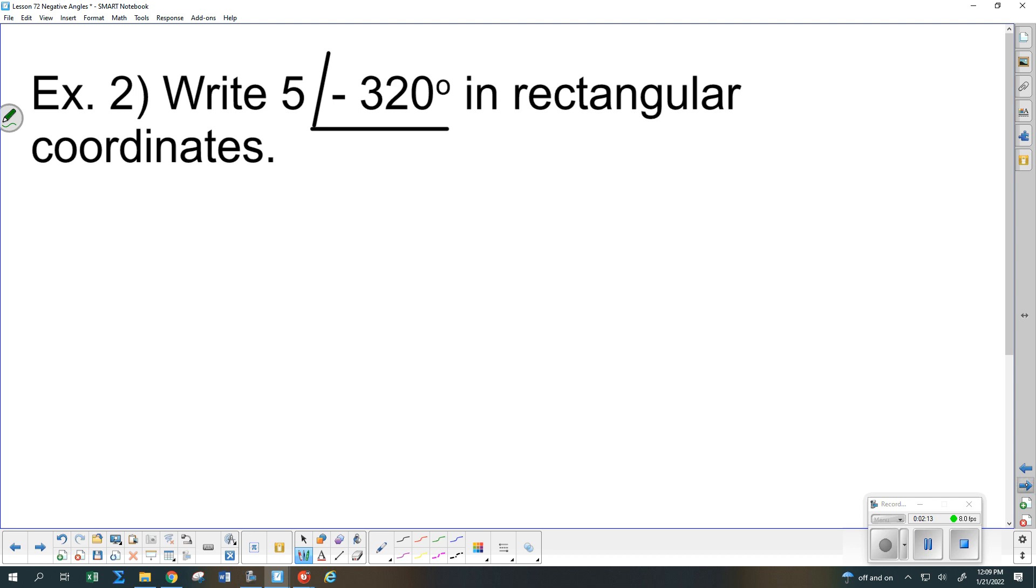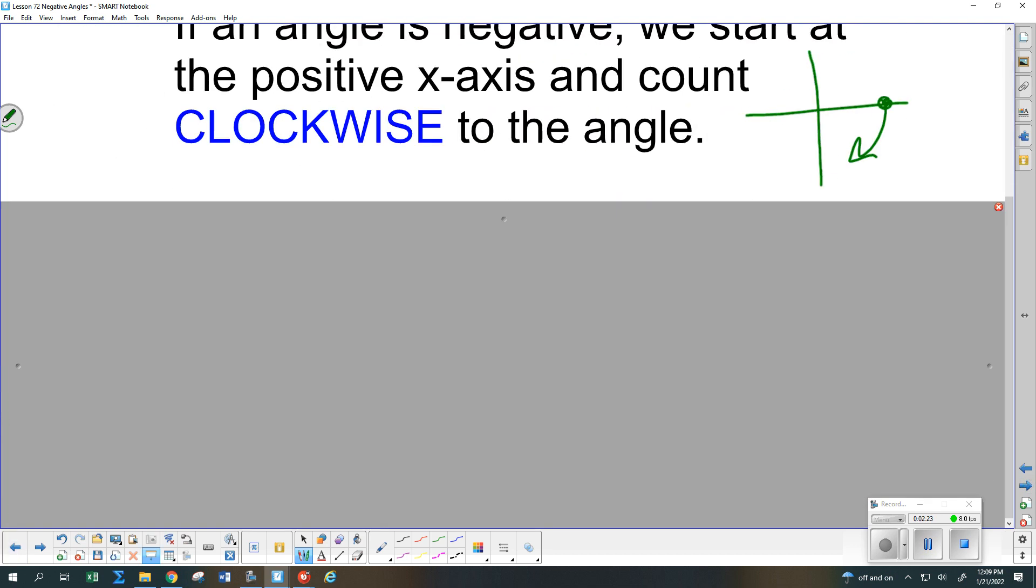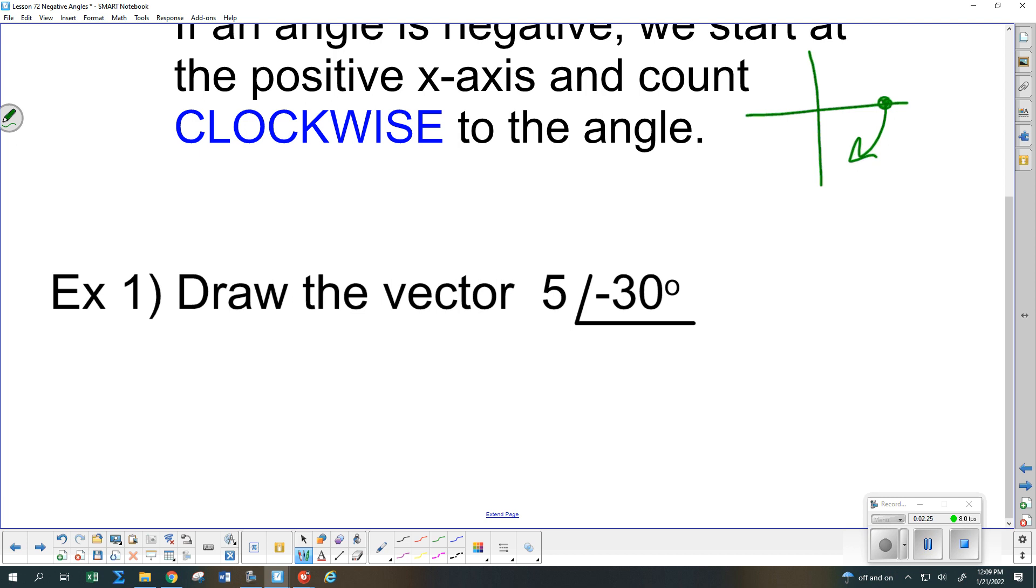So if we have something like 5 at negative 320, and we're asked to draw it. Actually, let me go back one. I had another example down here. This one we're just going to draw first, and then we'll do that one. So we just want to draw this one. So we start on the axis, the usual starting point, because there's a negative sign inside here with the angle. So we go down 30 degrees. So there's our 30 degree angle. And that's 5 long. And that's all that it means to have a negative in front of the angle.